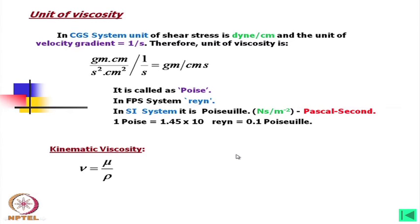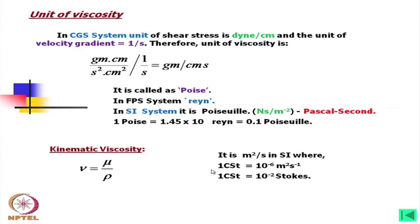One important aspect is that with a change in temperature there will be a change in viscosity, but density may not change very much. So definitely the kinematic viscosity will change with temperature. In SI units it is meter squared per second; one centistoke equals 10⁻⁶ meter squared per second, and one centistoke equals 10⁻² stokes.